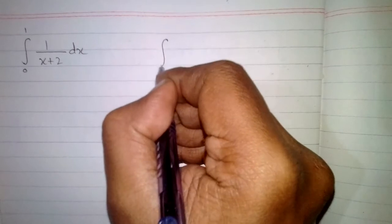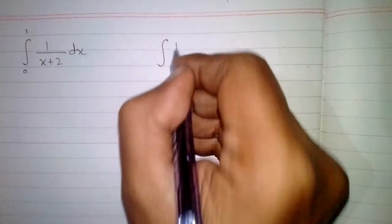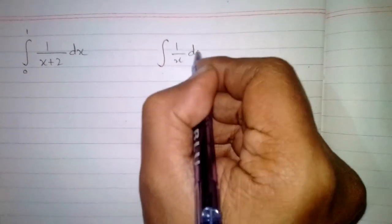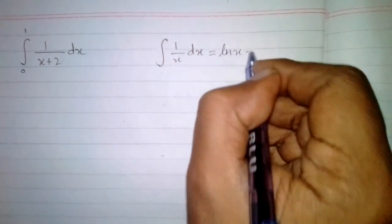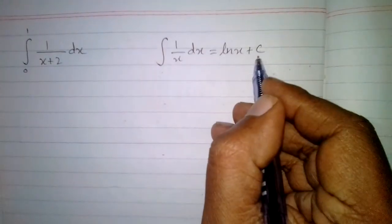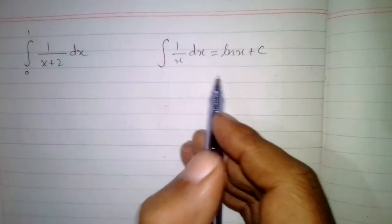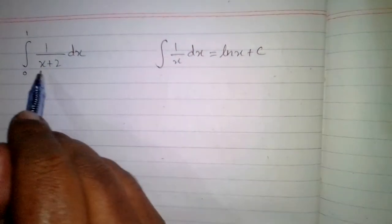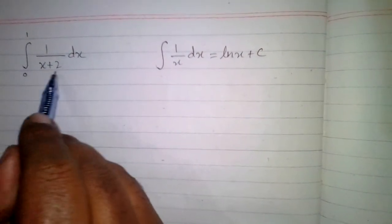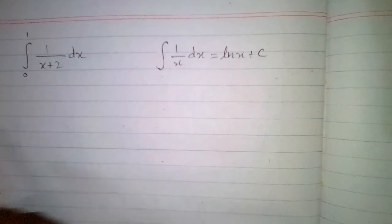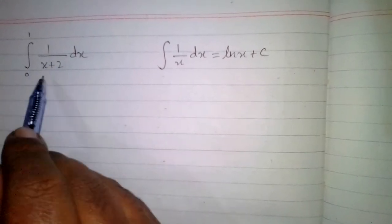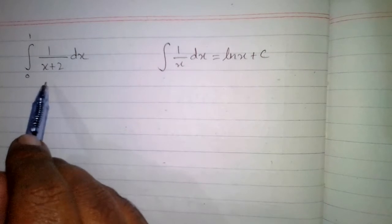We will use the formula: integral of 1 upon x is ln x plus C, where C is the constant of integration. When we have a linear factor in the denominator and 1 in the numerator, we can apply this formula.